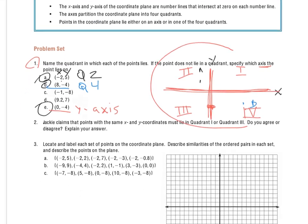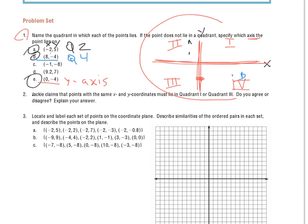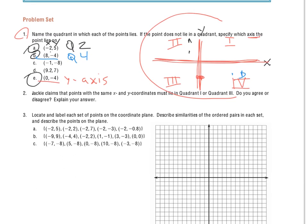So what we'll take a look at next is number 2. Jackie claims that points with the same x and y coordinates must lie in the first quadrant or the third quadrant. Do you agree or disagree? Explain your answer. I'm not going to go through the explanation here, but I want to give you a quick idea, and the best way to look at this is to try a couple points.